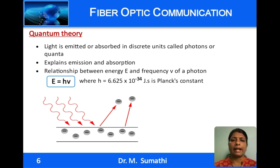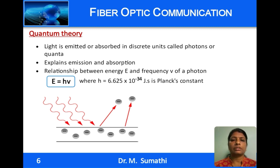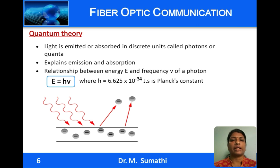When a photon is incident on an atom, the energy from the photon is transferred to an electron and the electron gets excited to a higher energy level. Similarly, when an electron from a higher energy level drops to a lower level, it emits photons of frequency ν governed by the expression E = hν, where E is the energy of the photon, h is Planck's constant, and ν is the frequency of the photon. So quantum theory could explain emission and absorption of light by materials.